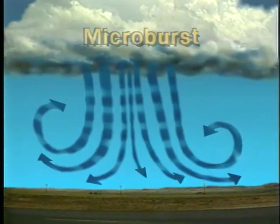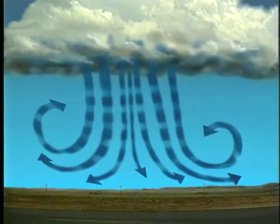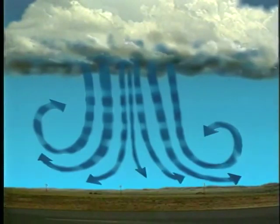A microburst is an intense localized downdraft which descends from the base of a convective cloud. As the air reaches the surface it spreads out in all directions often forming in a circular motion. This circulation creates an area of severe horizontal and vertical wind shear.